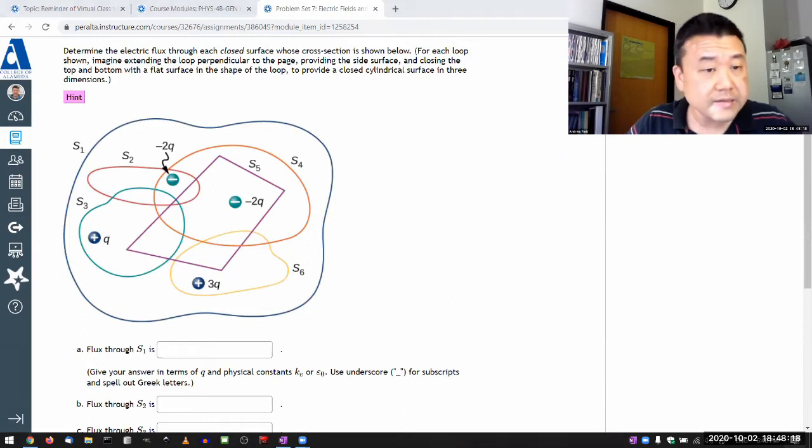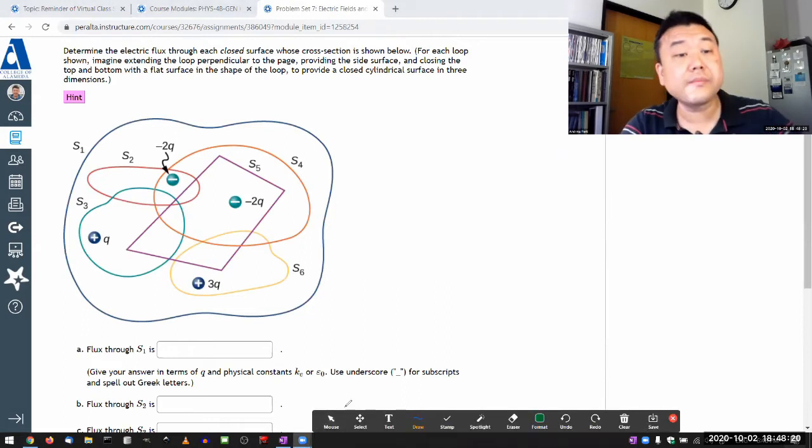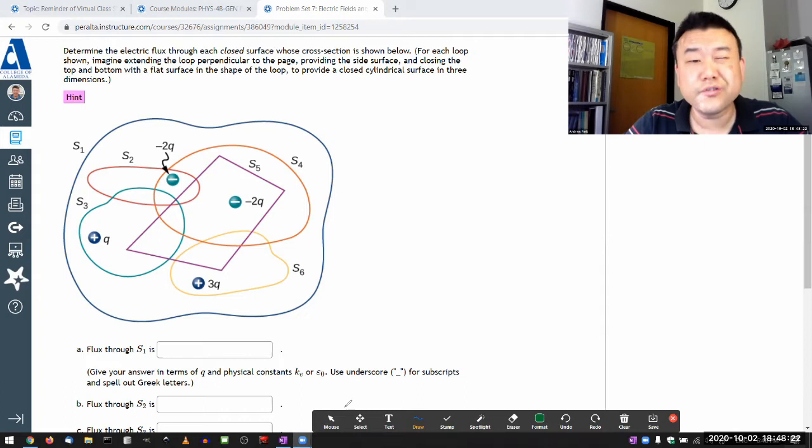So it says: determine the electric flux through a closed surface whose cross section is shown below. What you have to be careful about here is the challenge of representing three-dimensional objects on a two-dimensional plane. You have to imagine the charges sitting in three-dimensional space, and in that space, the closed surfaces that those loops you see are representing.